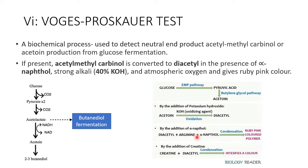When we add alpha-naphthol, in the presence of a compound containing guanidine or an amino group, a condensation reaction takes place, producing a ruby pink colored polymer — that is the positive result. To intensify the color, creatine is added. Creatine plus diacetyl also undergoes a condensation reaction, which intensifies this color.